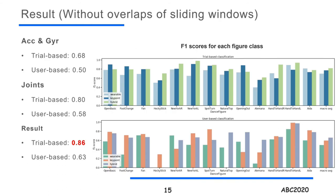These are the results. First, I'll show the result without overlaps, which means all sequential data in the figure are put into the LSTM cell. Using only acceleration and angular velocity, we obtain an F1 score of 0.68 with the trial-based and 0.50 with the user-based. Using only joint positions, we obtain 0.80 with the trial-based and 0.58 with the user-based. With the hybrid method using both modalities, we obtain 0.86 with the trial-based and 0.63 with the user-based. As predicted, the hybrid method brought the best score. However, the result using body joints alone was not so bad compared to the hybrid method.